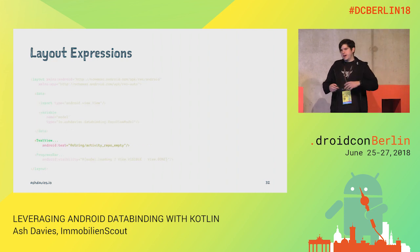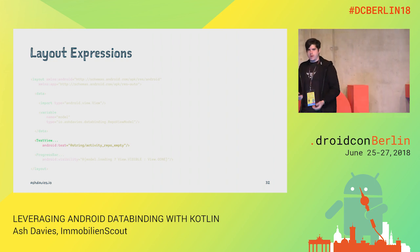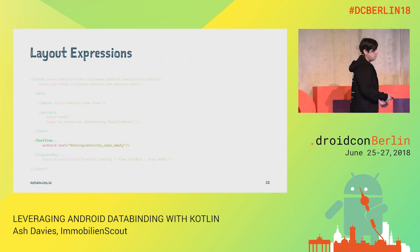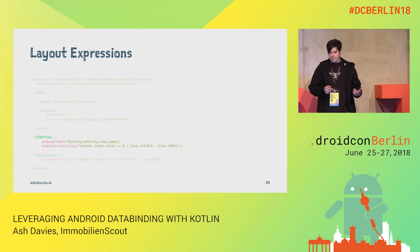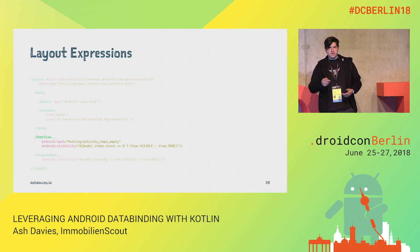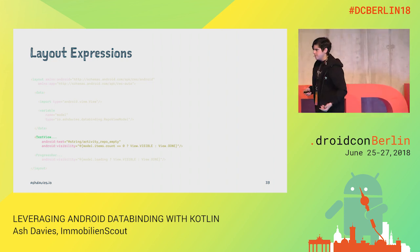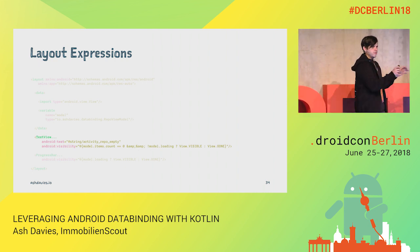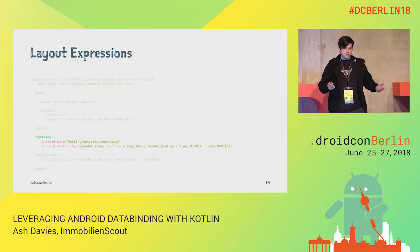What if we want to display an empty state in addition to our progress state — for example, to indicate to the user that their query didn't return any results? We introduce a text view, but we also want to make sure it's only visible when there are no items in our model. We also combine this with the loading property, resulting in a compound ternary expression using the ampersand, which has to be escaped because it's XML.